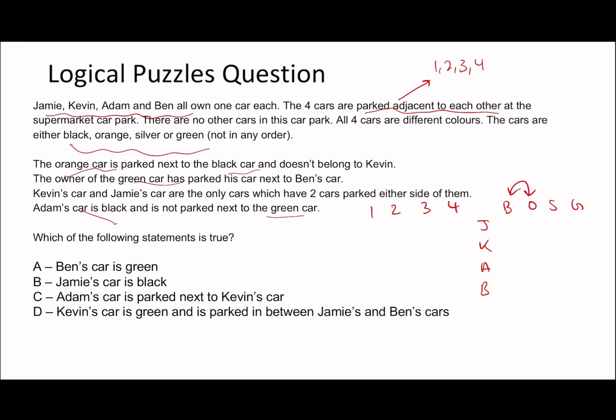The orange car is parked next to the black car. The orange car doesn't belong to Kevin. The owner of the green car is parked next to Ben's car, which means Ben's car isn't green. Kevin's car and Jamie's car are the only ones with two cars parked either side, meaning they are positions two and three, and Adam and Ben are positions one and four.